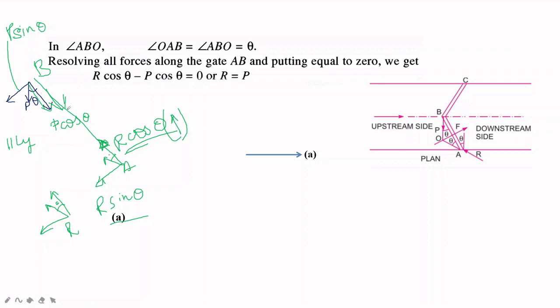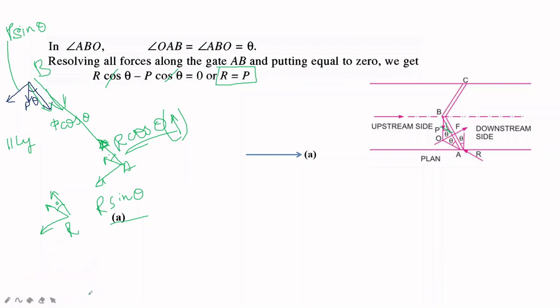Resolving forces along gate AB: R cos theta is upward (positive) and P cos theta is downward (negative). Sum of forces along AB equals zero, giving R cos theta = P cos theta, so R = P.